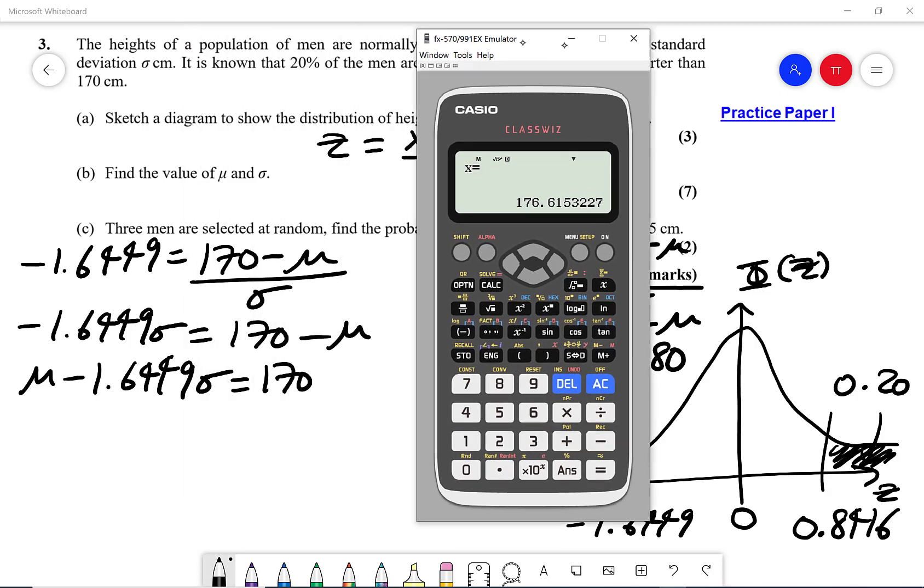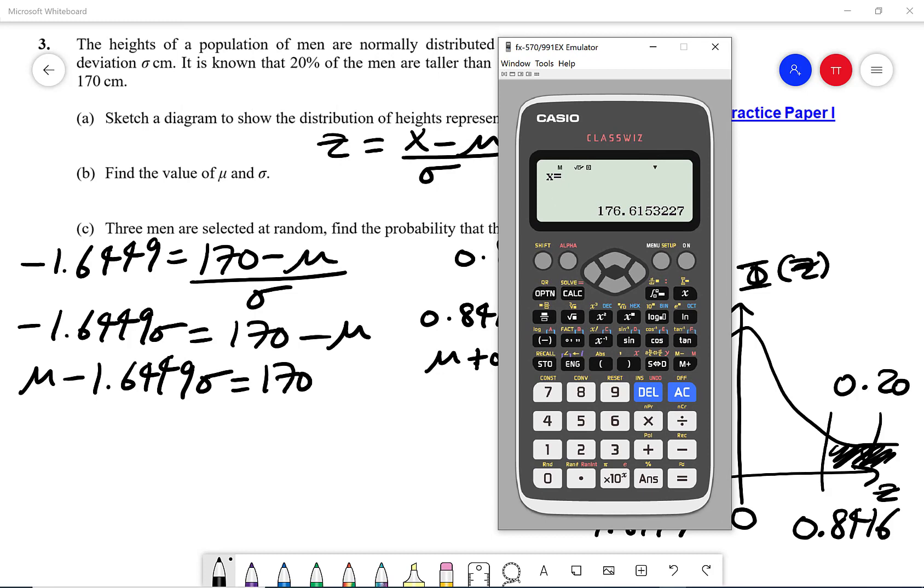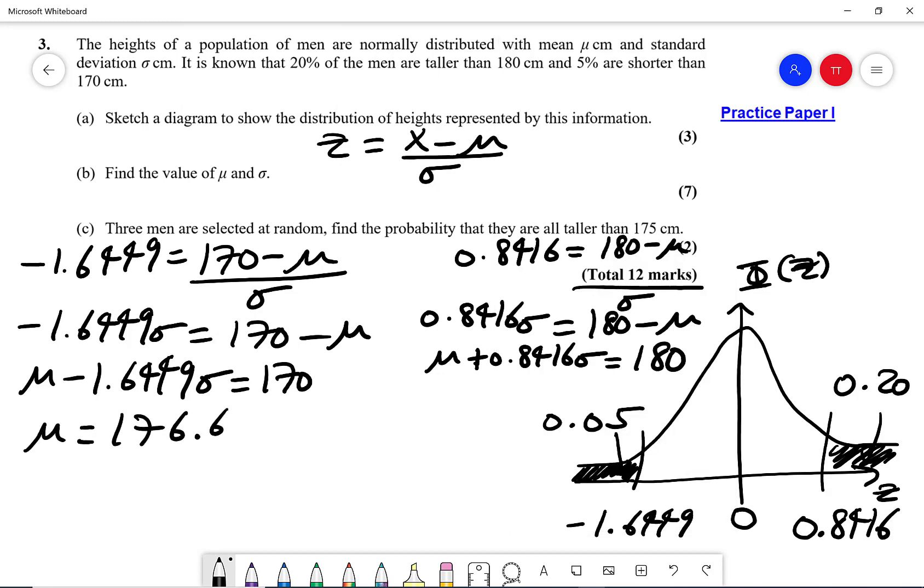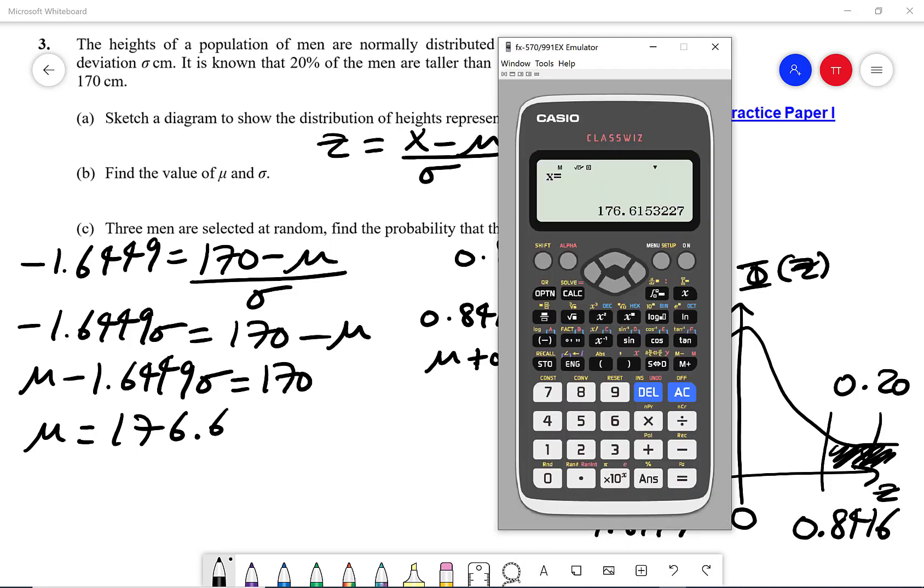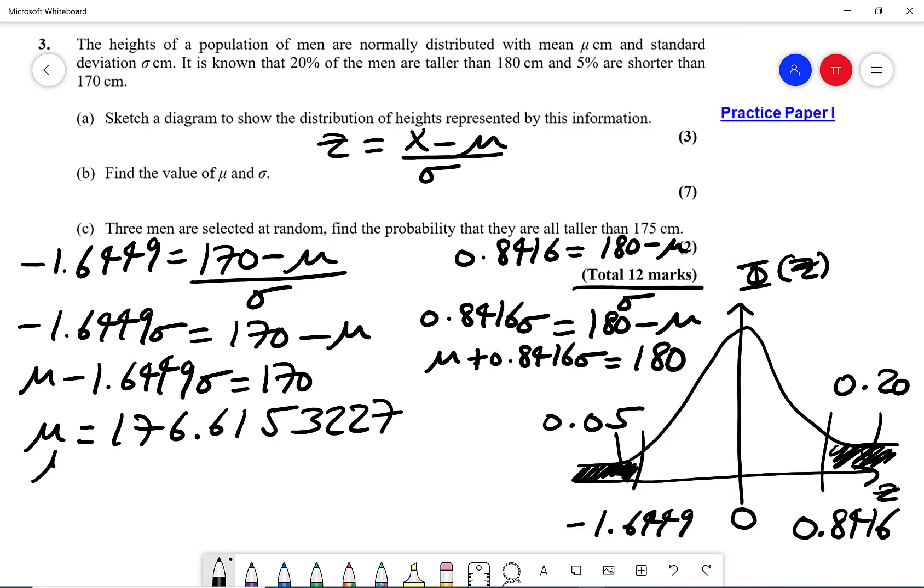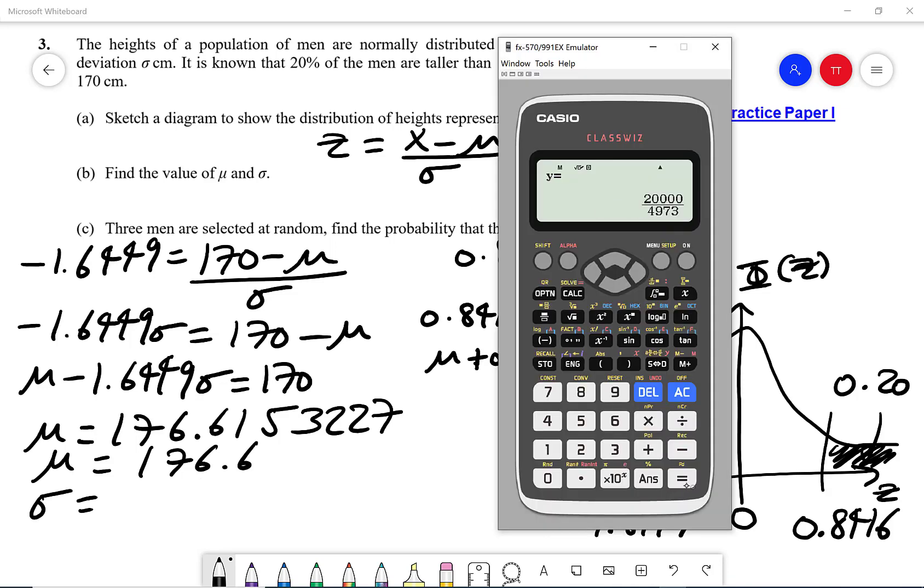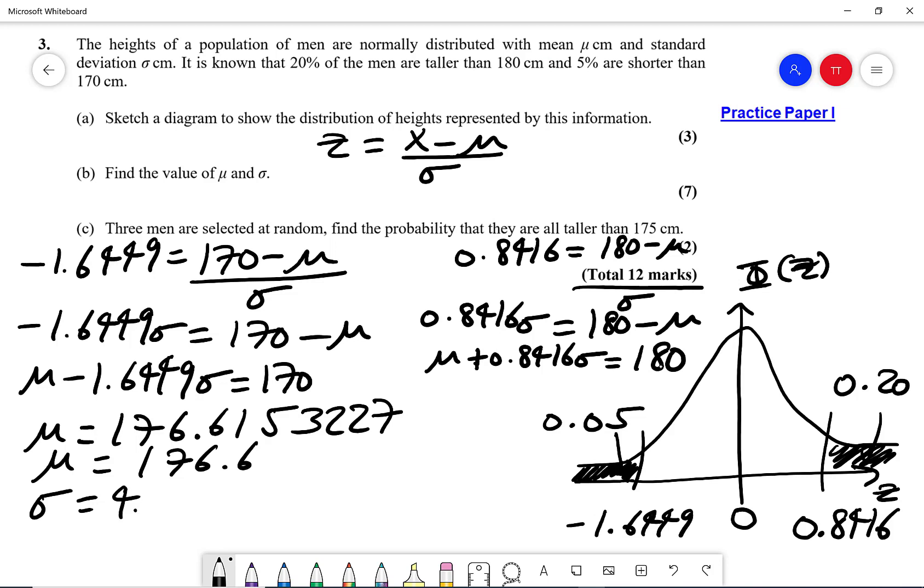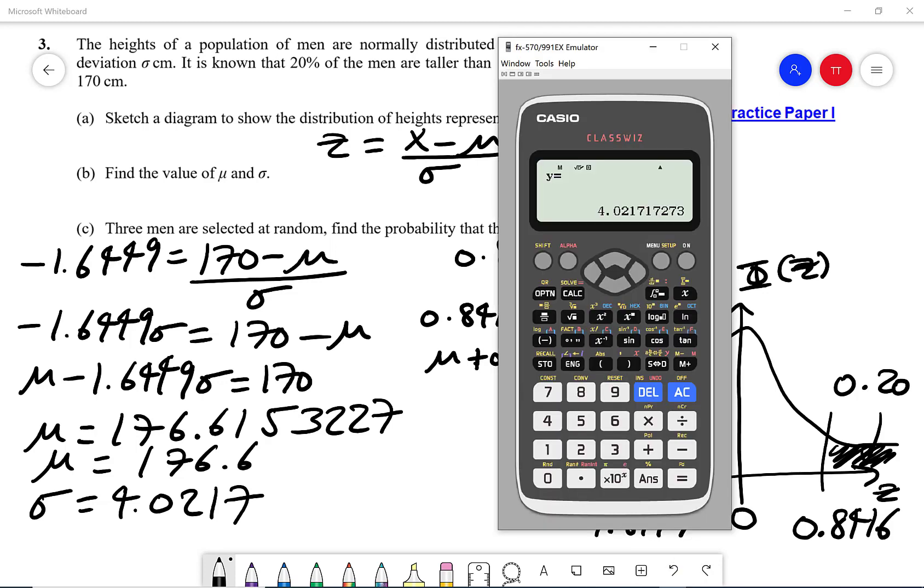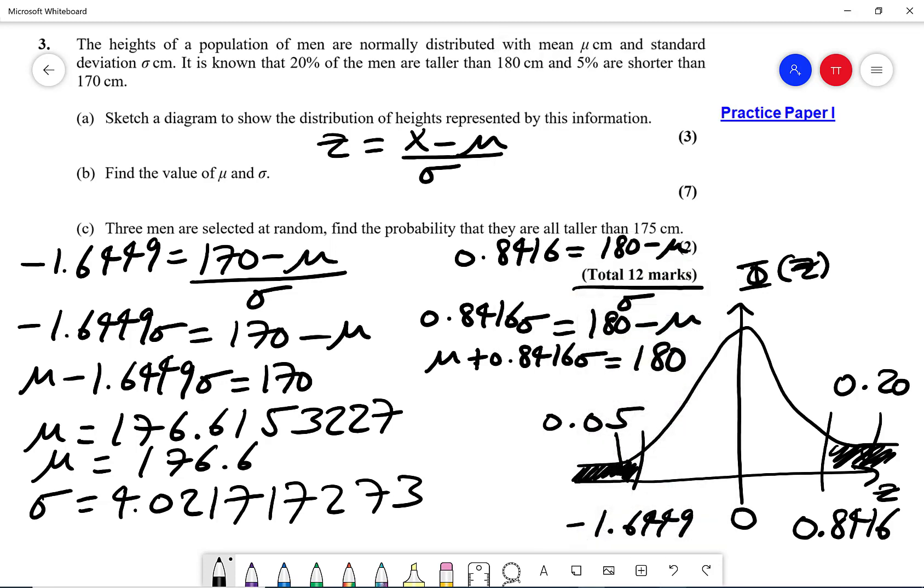Now what I'm going to do is write the full values out and then round later. So then I get x refers to mu, that's 176.6153227, so I can say mu is rounded to 176.6. Sigma, again I'm going to write the true value out, so I'm going to get 4.021717273, and that rounds up to approximately 4.02 for sigma.